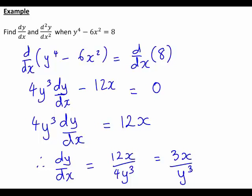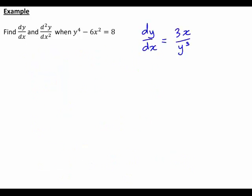So that would be the first step here. So this is what we've found so far, that dy dx equals 3x divided by y cubed. Now we can leave it like that, but in this particular case, I'm going to just rewrite this as 3x times y to the minus 3, just so that it's a bit simpler to differentiate again at the next stage.